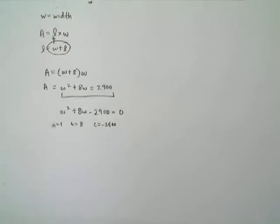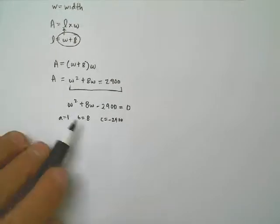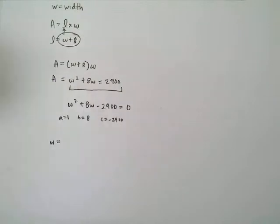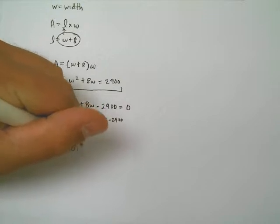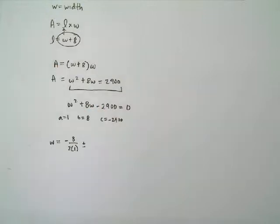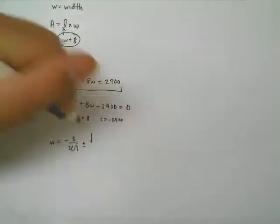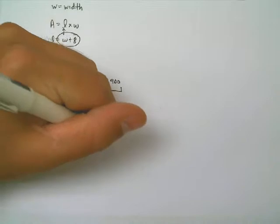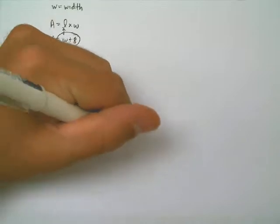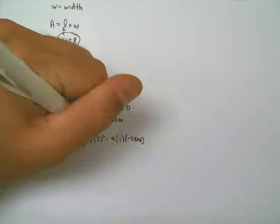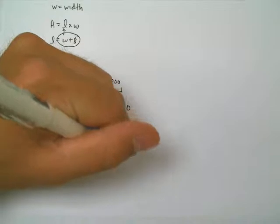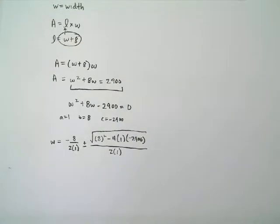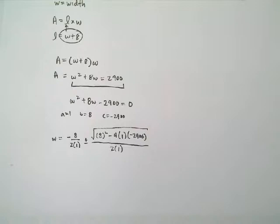Instead of solving for X squared, I'm solving for W squared. So, W equals negative B over 2A plus or minus the square root of B squared minus 4AC, which is negative 2,900. And I've got to be careful about that negative sign. It makes a big difference. And that's all over 2A. Now, it's time to just simplify this.